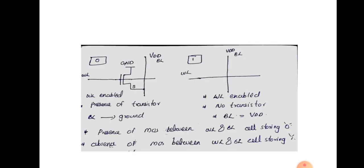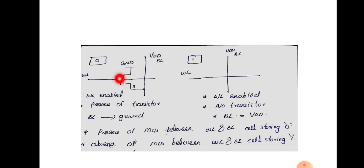But in the case of NOR based ROM, the difference is that here the bit line will be connected to VDD. And the MOS transistor connecting the word line and bit line will have the gate-source connection at the word line and bit line, but its drain is grounded.